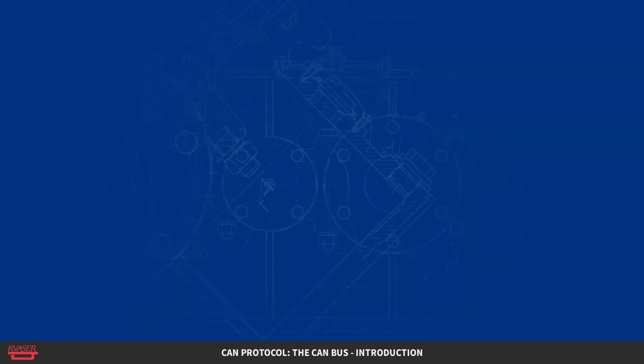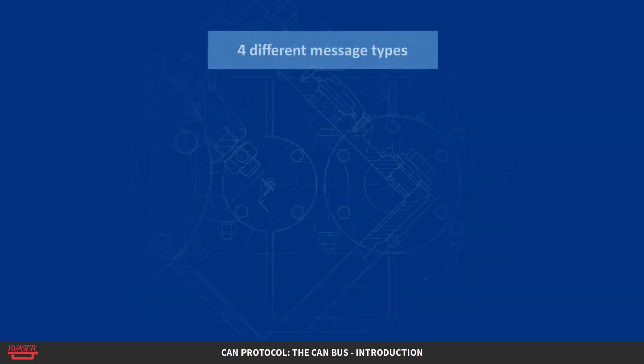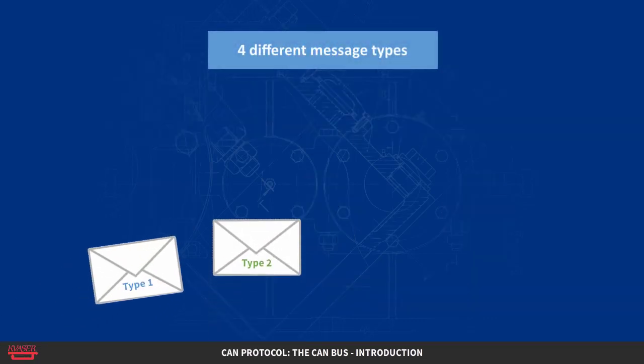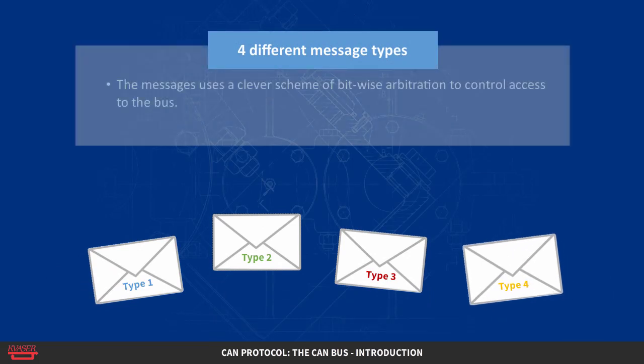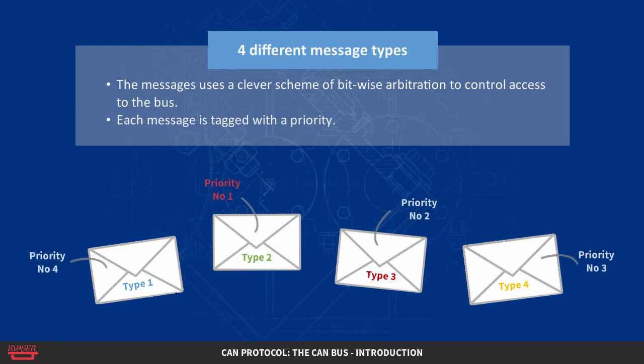The CAN standard defines four different message types. The messages use a clever scheme of bitwise arbitration to control access to the bus, and each message is tagged with a priority.